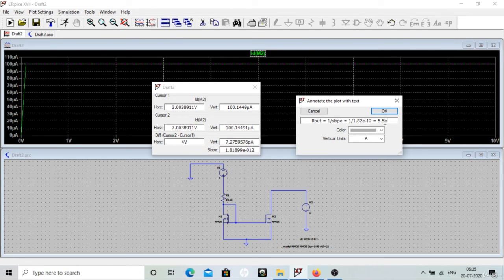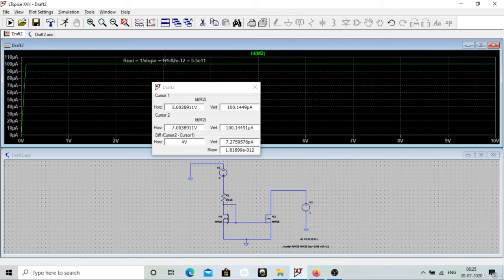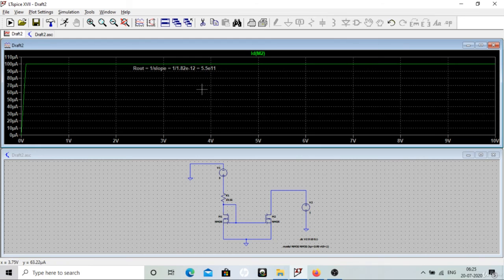That will be very high output resistance but it is not infinite. Let's calculate it. So I have calculated the value, you will get something around 10 to the power 12, 5.5 e to the power 11. So this much high output resistance you are getting, you can see that.